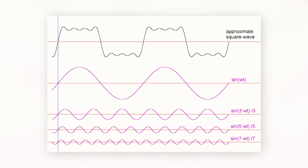A typical distorted AC signal when measured looks something like this. Using some Fourier analysis, this waveform is simply made up of several harmonics of the signal, which have resulted in the distortion of the original signal. Now let's break that down.